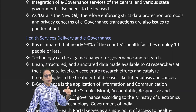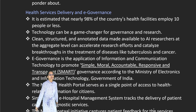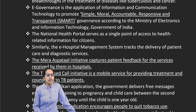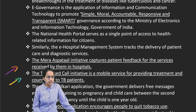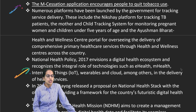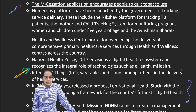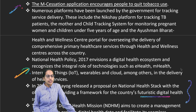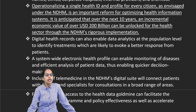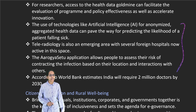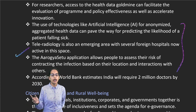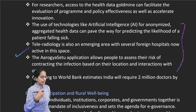We are also talking about bringing in data protection protocols. For health service delivery, SMART — which is Simple, Moral, Accountable, Responsive and Transparent governance — is important. The Mera Hospital initiative captures feedback. The TB missed call initiative provides counseling to TB patients. M-Cessation is for quitting tobacco use. The national health policy focuses on wearables, clouds, and internet of things. There are various proposals on a national health stack for a futuristic digital health system, the national digital health mission, operationalizing a single health ID, using AI, and tele-radiology, where foreign hospitals can treat patients remotely.